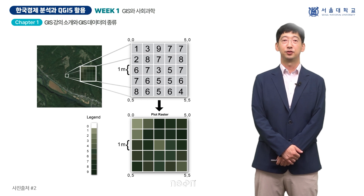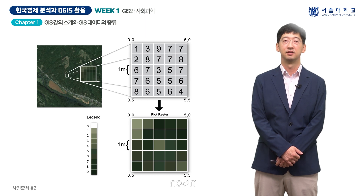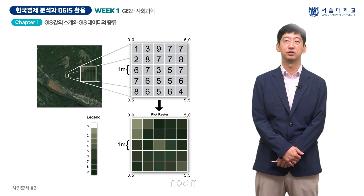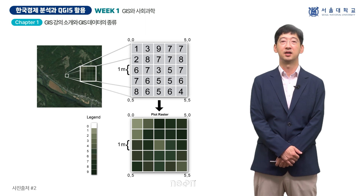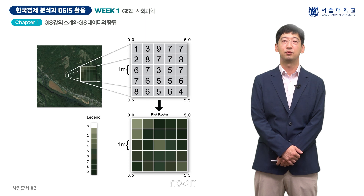라스터 데이터는 고도, 기온 등 연속적인 수치가 나타나는 경우 종종 사용되는 자료의 형태입니다. 주간 또는 야간 위성 영상뿐만 아니라 대기오염물질 배출량과 같은 환경 관련 정보 등 센서로 데이터를 얻을 경우에 주로 사용됩니다.